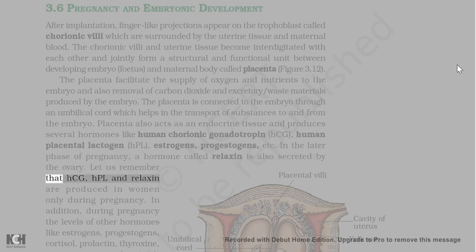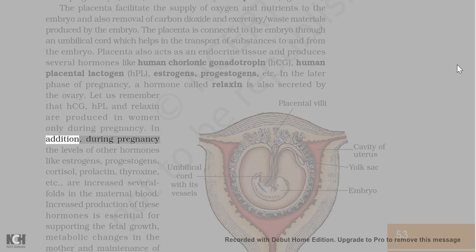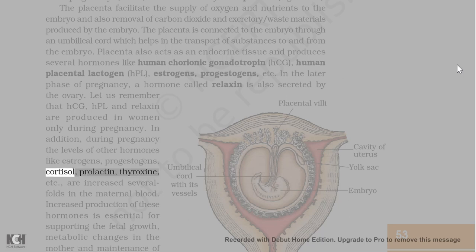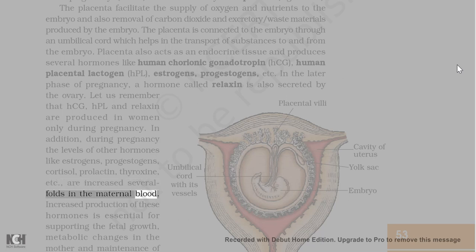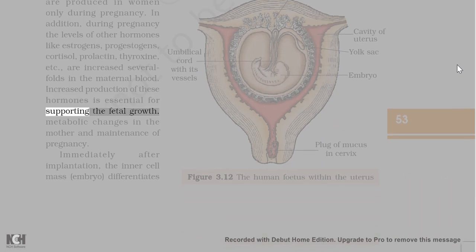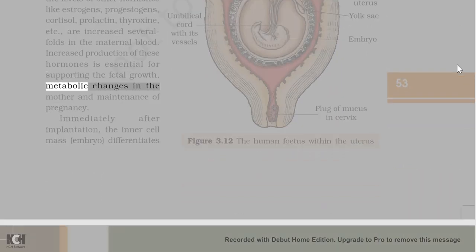HCG, HPL, and relaxin are produced in women only during pregnancy. In addition, during pregnancy the levels of other hormones like estrogens, progestogens, cortisol, prolactin, thyroxine, etc. are increased several-fold in the maternal blood. Increased production of these hormones is essential for supporting fetal growth, metabolic changes in the mother, and maintenance of pregnancy.